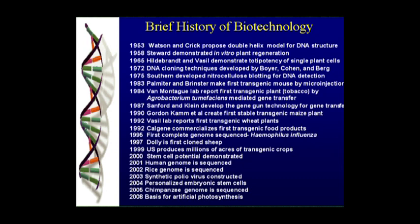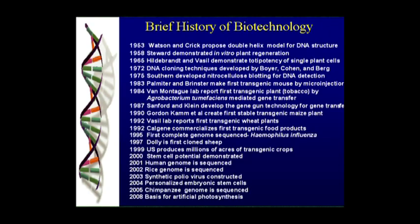If you look at this timeline, the first gene was cloned by Boyer, Cohen, and Berg at the University of San Francisco in 1972. We're going to use the word cloning in two ways in this class: to clone an organism is to make an entire identical copy of that organism; to clone a piece of DNA is to copy a piece of information that's encoded in DNA. In 1983, Palmiter and Brinster made the first genetically modified animal at the Jackson Lab in Bar Harbor, Maine, by injecting a foreign piece of DNA into a mouse. So we've been able to genetically engineer animals since 1983.